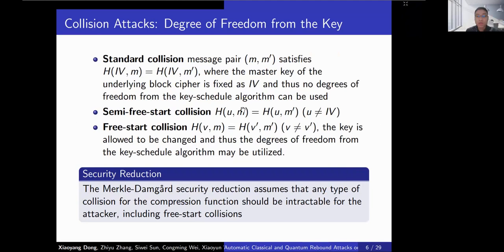On collision attacks, we have three settings. The first is the standard collision, which uses the standard initial vector IV to find a colliding pair M and M'. The second is the semi-free-start collision, which uses a different initial vector. The third is the free-start collision, which uses a pair of initial vectors. In AES-like hashing, the free-start collision setting allows attackers to use degrees of freedom from the key. It should be noted that in Merkle-Damgård security reduction, all three types of collision should be avoided.